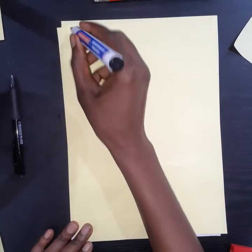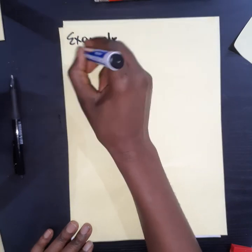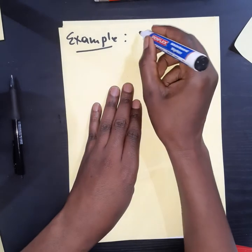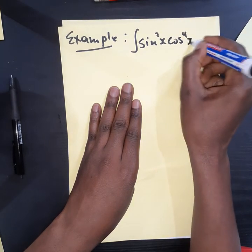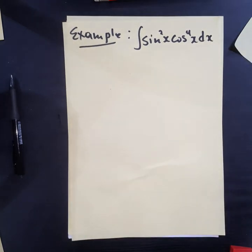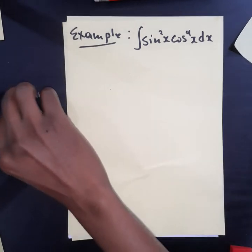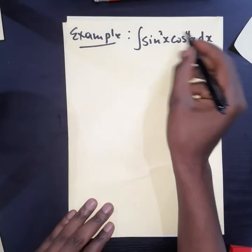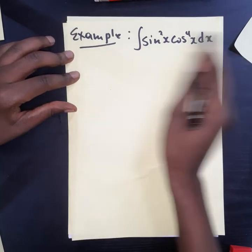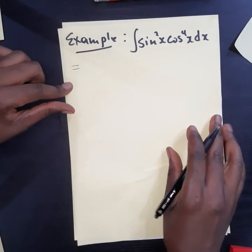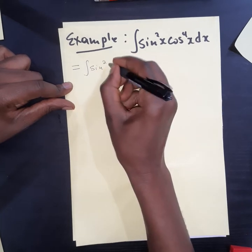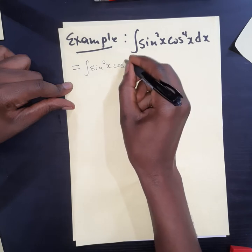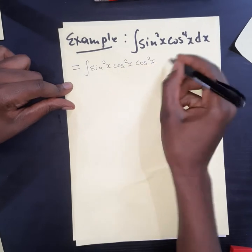So let us just take an example. Let us evaluate the integral of sine squared of x cosine to the power of 4 of x dx. In this case, we note that both are even. So it is better to look at it in this way. You can rewrite this as sine squared of x, cosine squared of x, cosine squared of x dx.